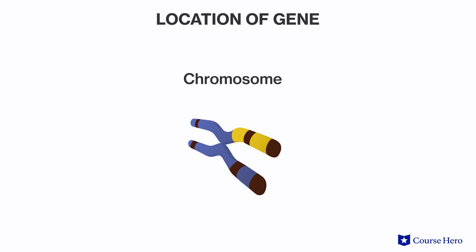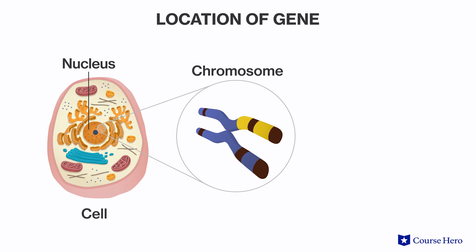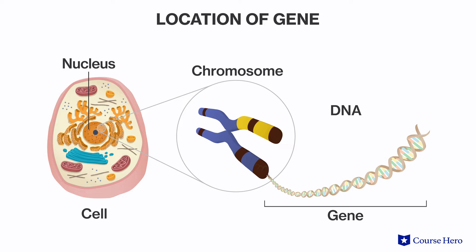Humans have 23 pairs of chromosomes that exist in the nucleus of every cell in our body, making up our genotype — our genetic code.